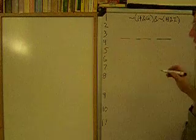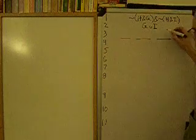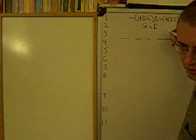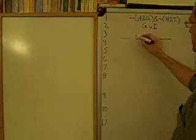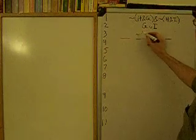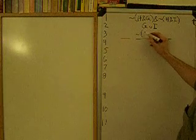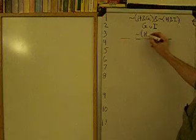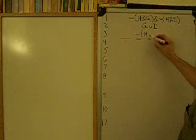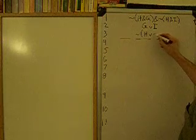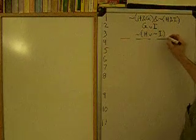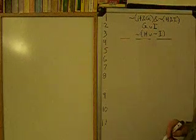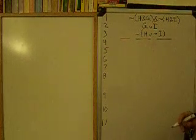Line two is G or I. Line three is: it is not the case that H, or not I. That's line four.